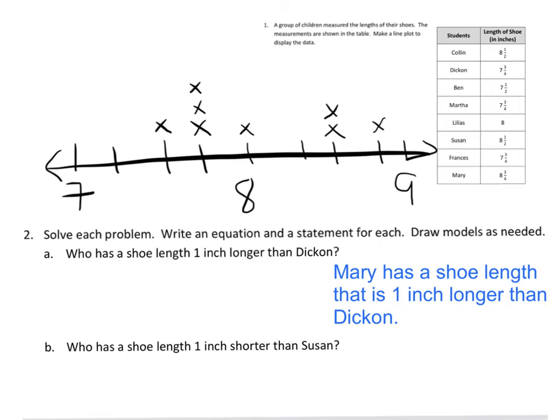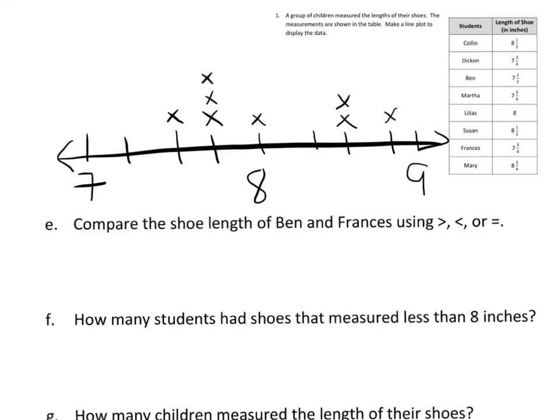How about B? Who has a shoe length one inch shorter than Susan? So Susan is eight and a half. One inch shorter, it would be seven and a half. So you'd have to write about Ben having that one. You can pause it and write that on your own. I'm going to skip to the next question. I'll skip a couple actually. Let's skip down to E.